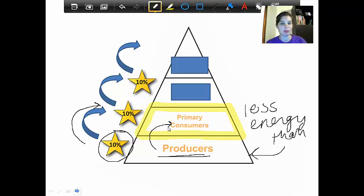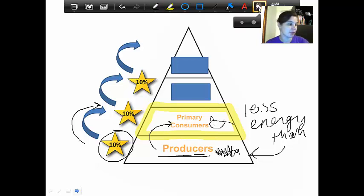To put this in real terms, for example, of the grass that's growing down here as a producer, only 10% gets passed on when the little mouse eats the grass. So the mouse can only get 10% on average of the energy that the producers provide. It's an average, it can vary from ecosystem to ecosystem, but that's an easy one to remember is 10%. And that's why our energy goes down. That's why the producers have more energy than the primary consumers.